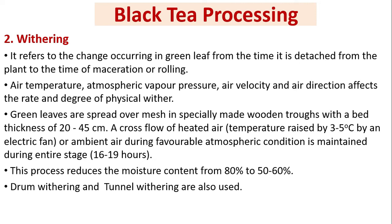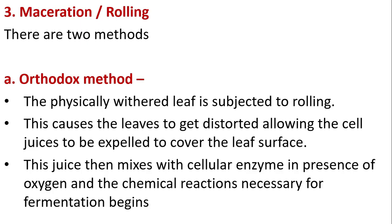Drum withering and tunnel withering are also used. Maceration or rolling — orthodox method: the physically withered leaf is subjected to rolling, causing the leaves to get distorted and allowing cell juices to be expelled to cover the leaf surface. This juice then mixes with cellular enzymes in the presence of oxygen, and the chemical reactions necessary for fermentation begin.